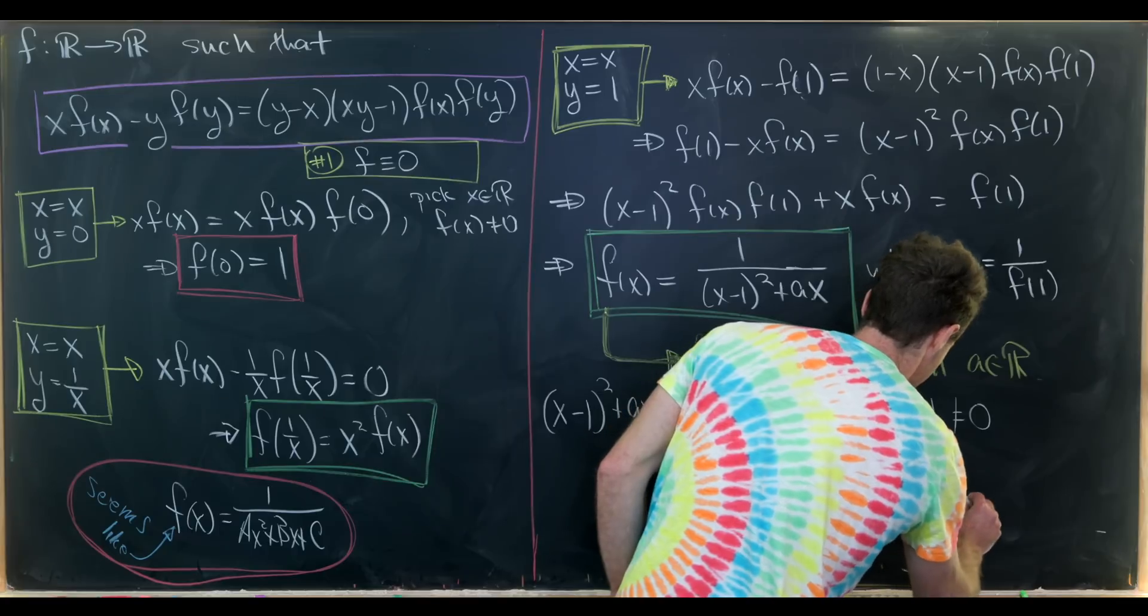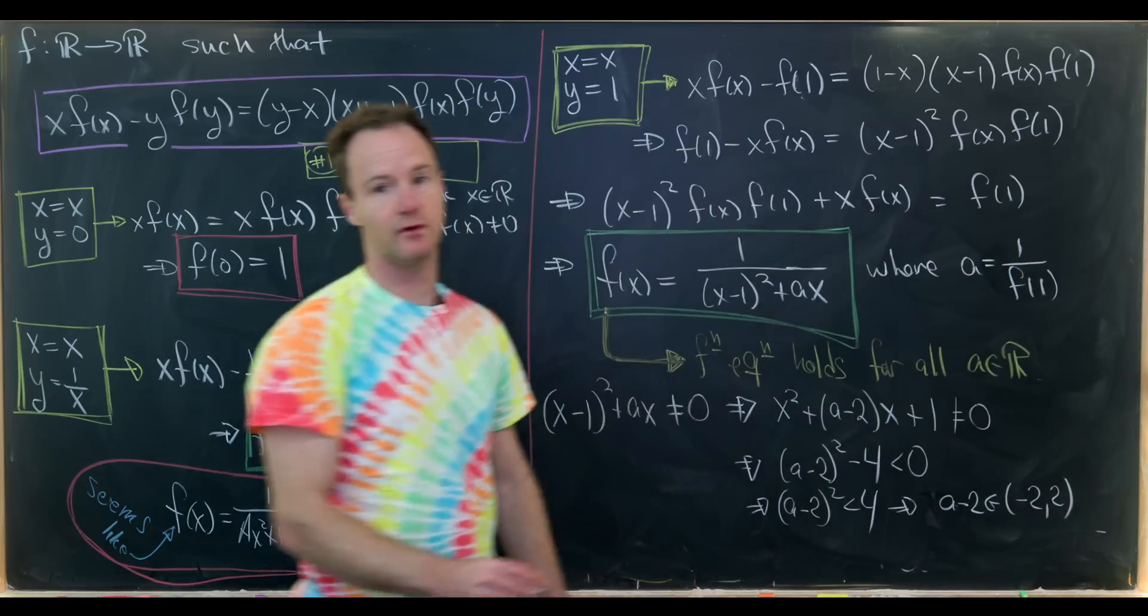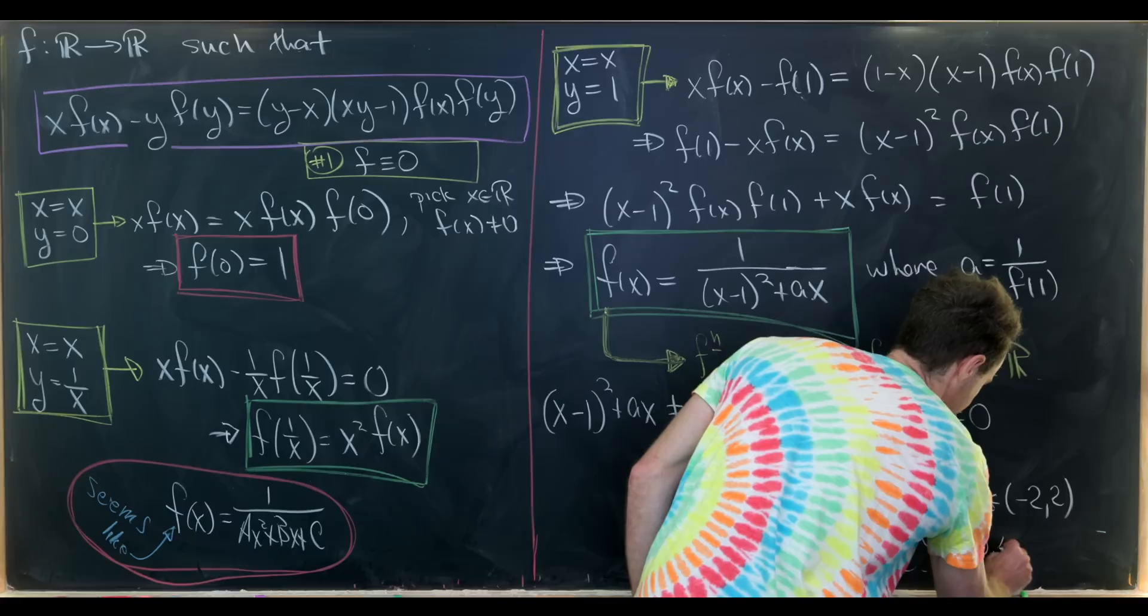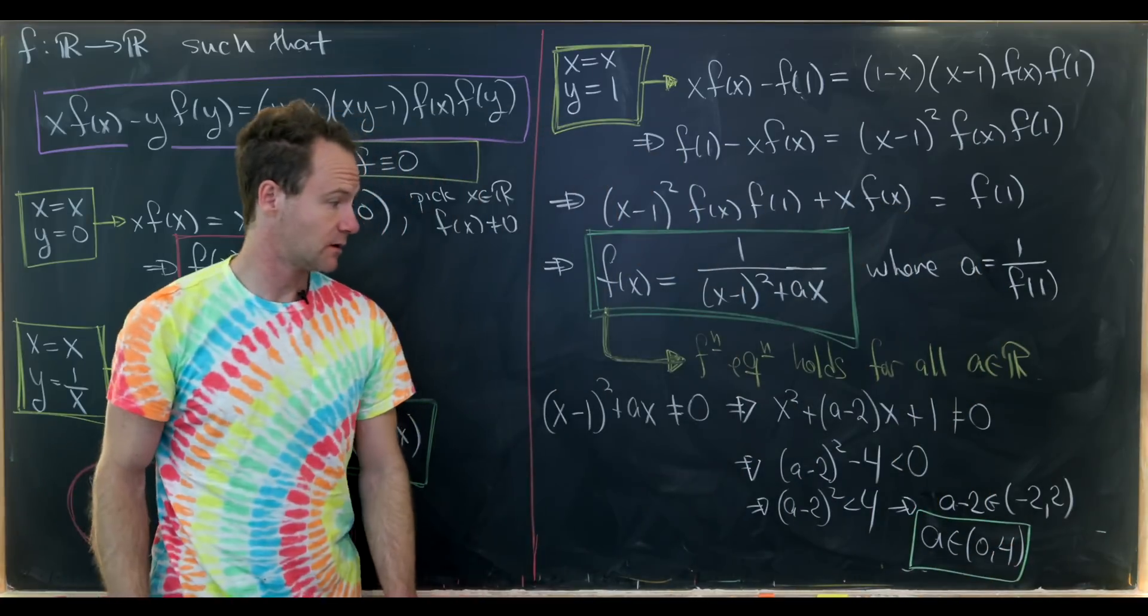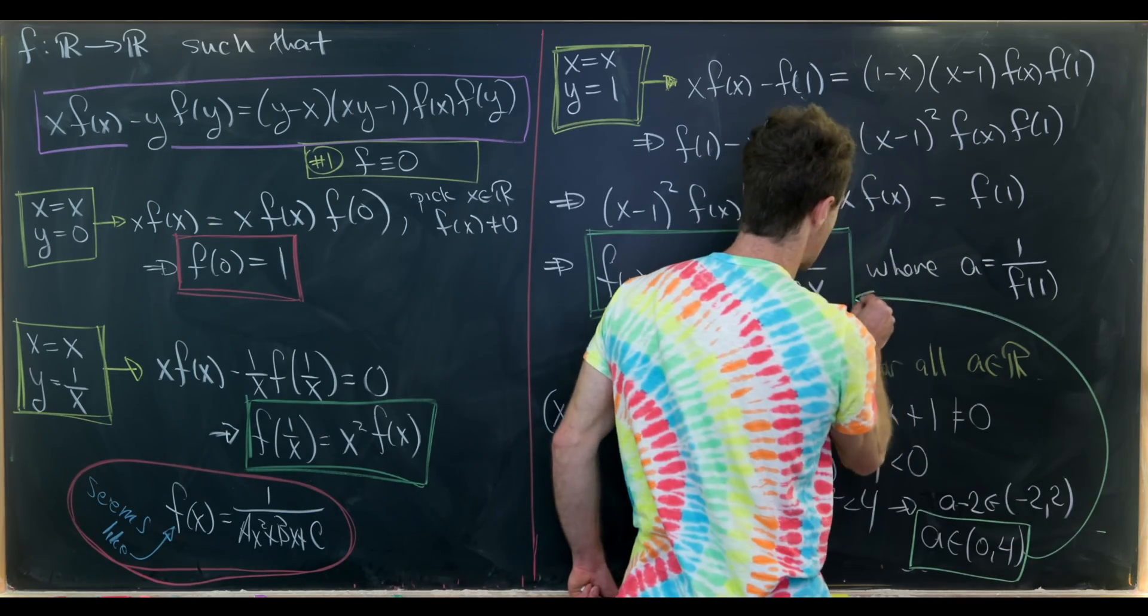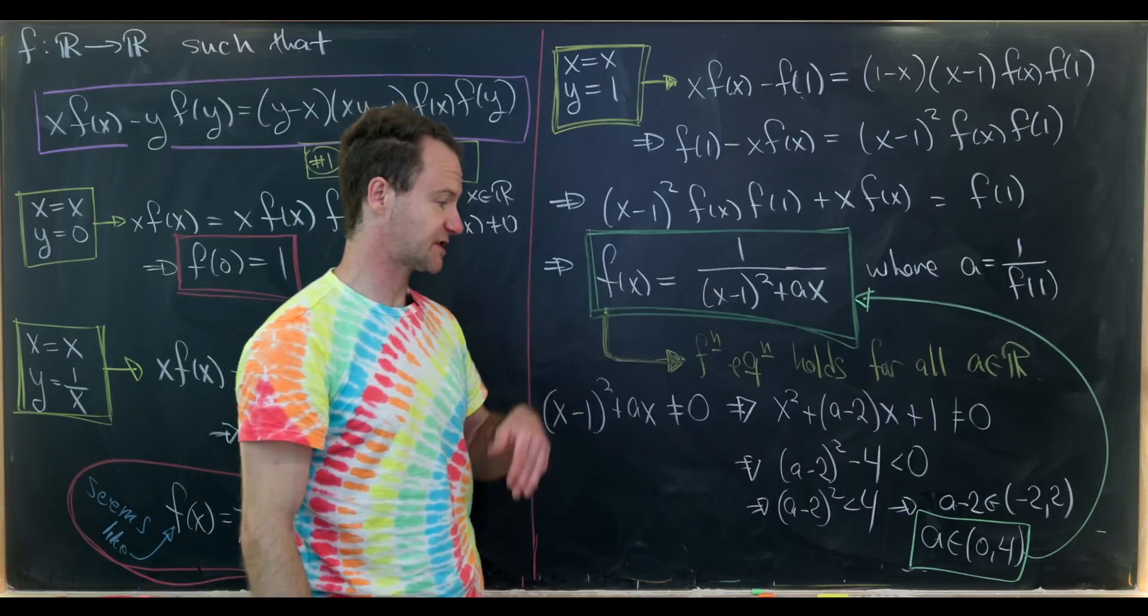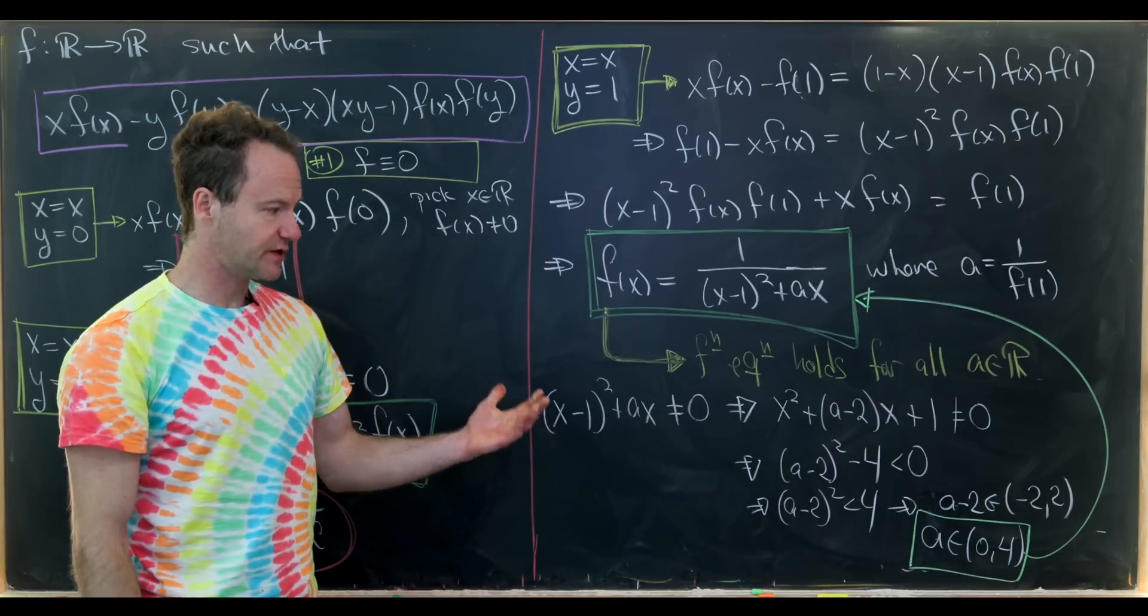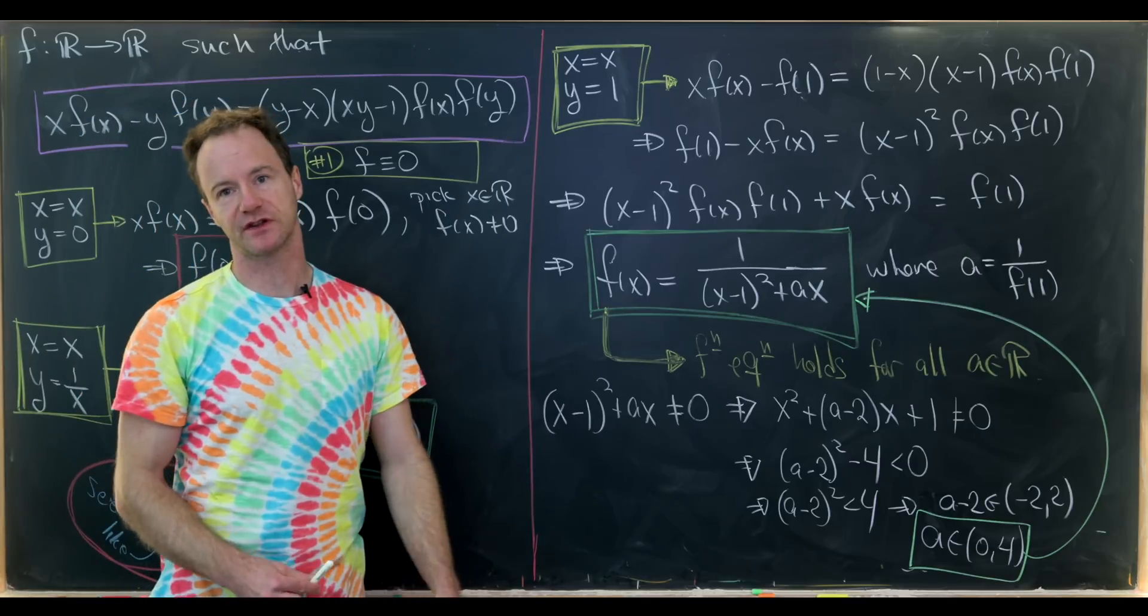But what does that tell us? That tells us that a-2 is on the interval from -2 to 2. But then we can add 2 to both sides and we'll see that this means that a is on the interval from 0 to 4. So these are the values of a that allow us to have a domain of all real numbers. And that would be like our final solution - all functions of this form where a comes from that interval.